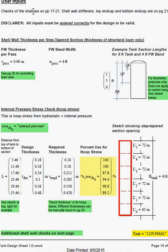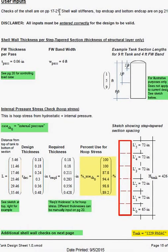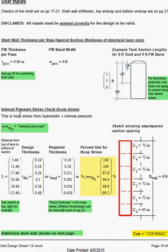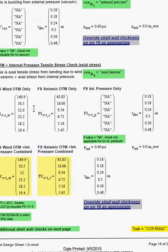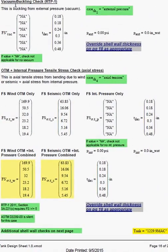Checks are shown for the shell wall on pages 17 through 21. The shell wall thickness for step taper section. Internal pressure stress check for hoop stress. And various loads. Vacuum buckling is checked for RTP1.